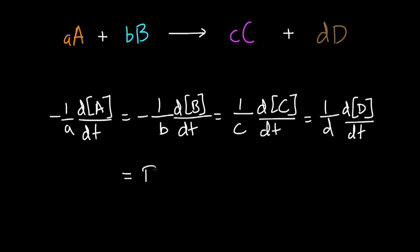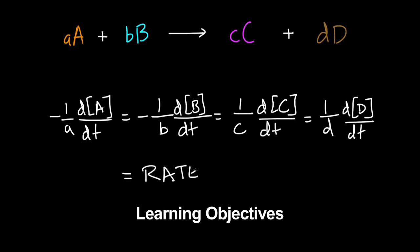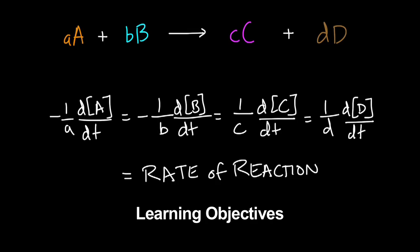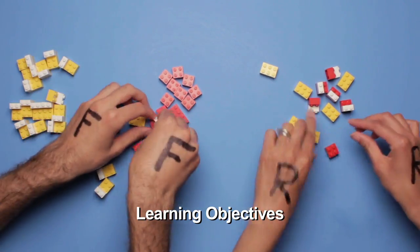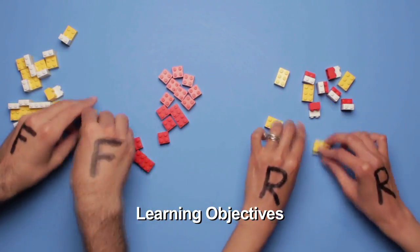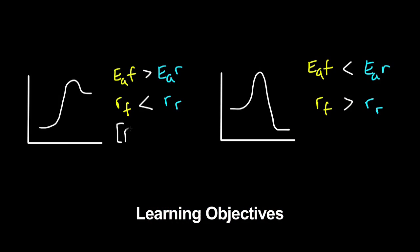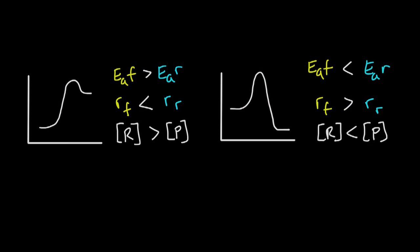After watching this video, you'll be able to understand how reaction rate is influenced by reactant concentration, explain how reaction rates change as a system establishes equilibrium, and predict relative equilibrium concentrations of reactant and product based on rates of forward and reverse processes.